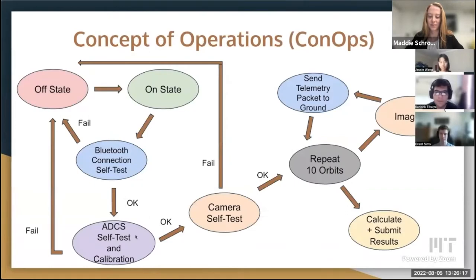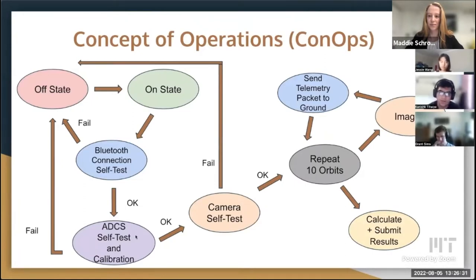Here's the concept of operations diagram showing the different states of the CubeSat during its flight. After the on-state, there are three subsystem self-tests the CubeSat goes through, and then it goes into its 10 orbits with images being taken in each orbit. The relevant data is then sent to the ground station where the results are determined.